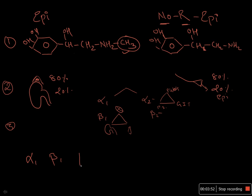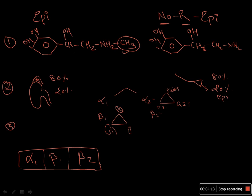Epinephrine is also called the equality hormone because it works equally on all three important receptors: alpha one, beta one, and beta two. If you inject epinephrine in a person suffering from cardiac arrest, beta one would improve the cardiac condition, alpha one would constrict the vessels from organs where blood is not needed, and beta two would dilate the bronchial muscles so that more respiration can occur.